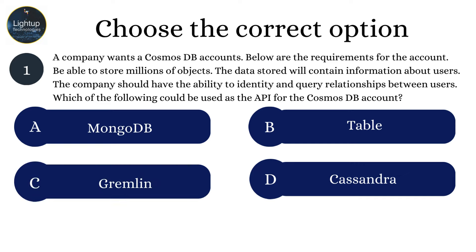A company wants a Cosmos DB account. Below are the requirements for the account: be able to store millions of objects, the data stored will contain information about users, and the company should have the ability to identify and query relationships between users. Which of the following could be used as the API for the Cosmos DB account?